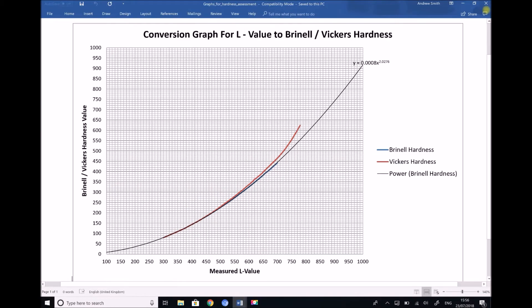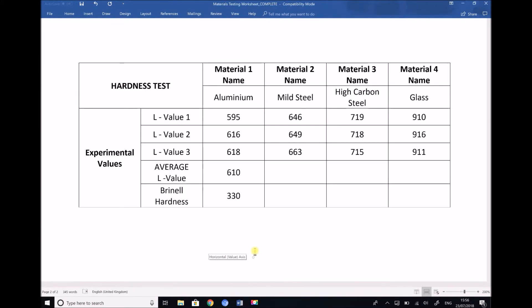If we return to our table then, we can see here that our average L value of 610 for aluminium corresponded with a Brinell hardness of 330. So what you should be able to do now is repeat this process for material 2 the mild steel, material 3 the high carbon steel and material 4 the glass. You'll then be able to populate the remaining squares in this table to provide a direct comparison of the Brinell hardness of these four materials.